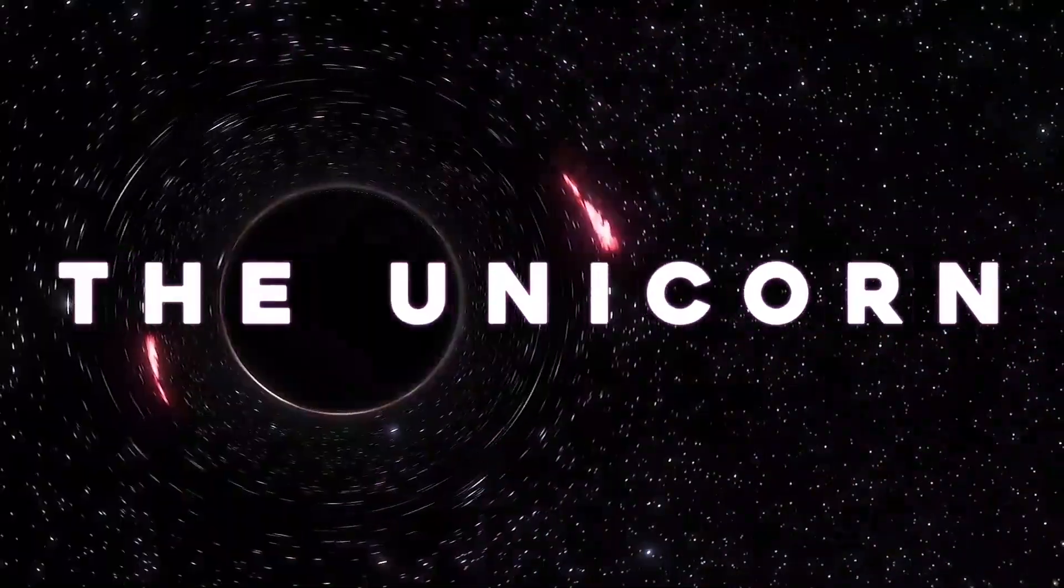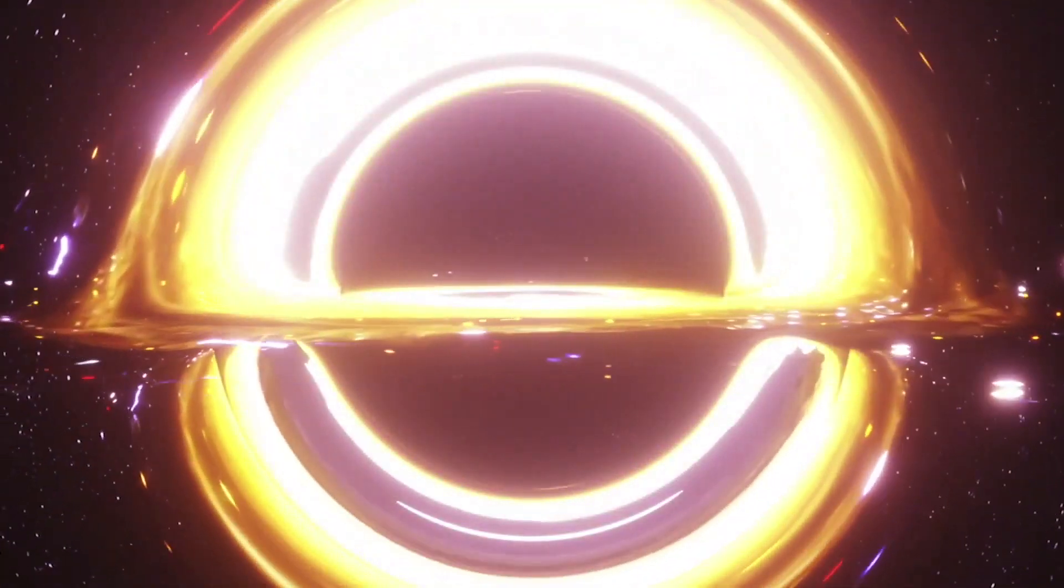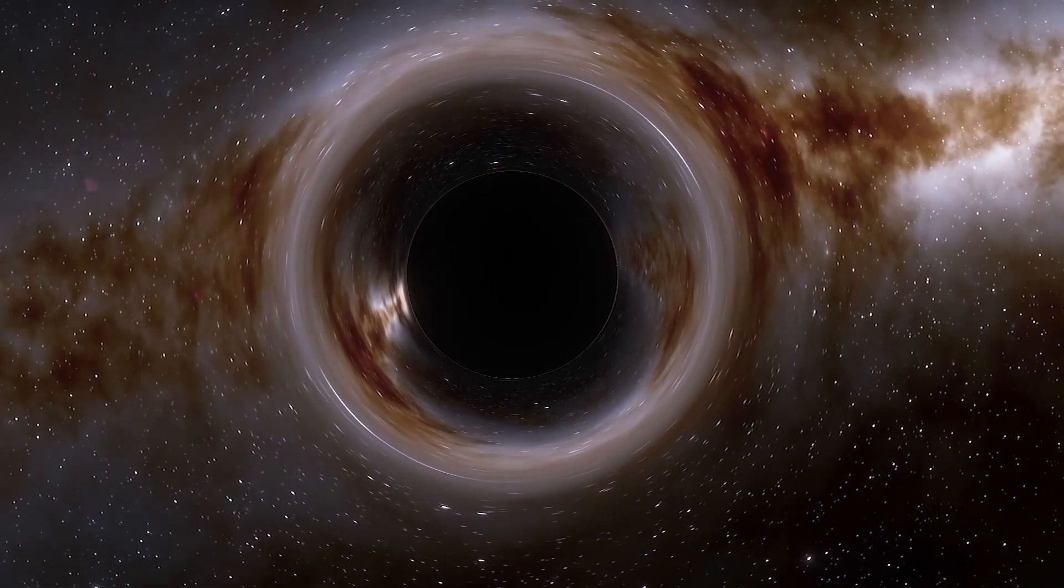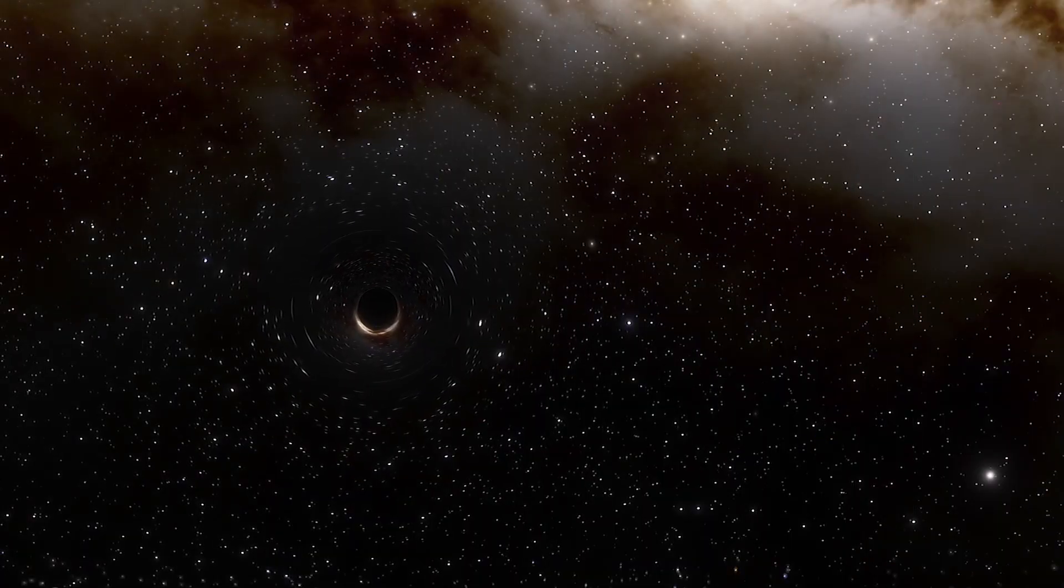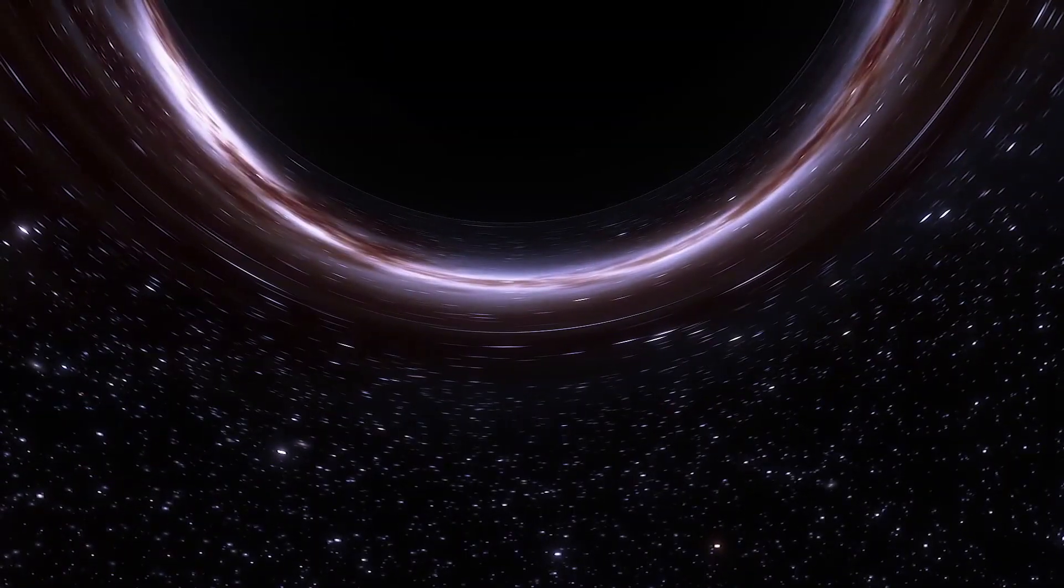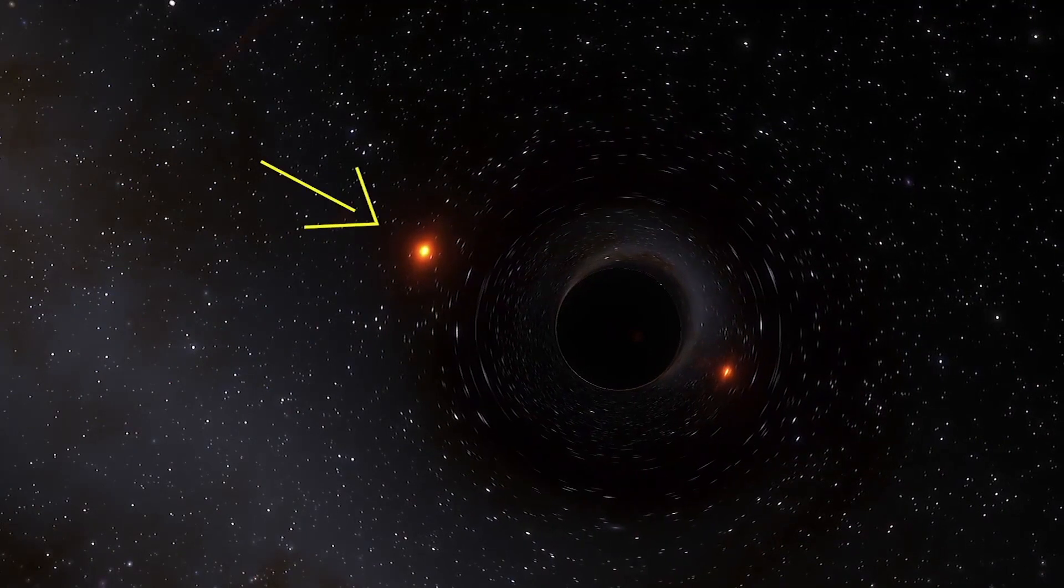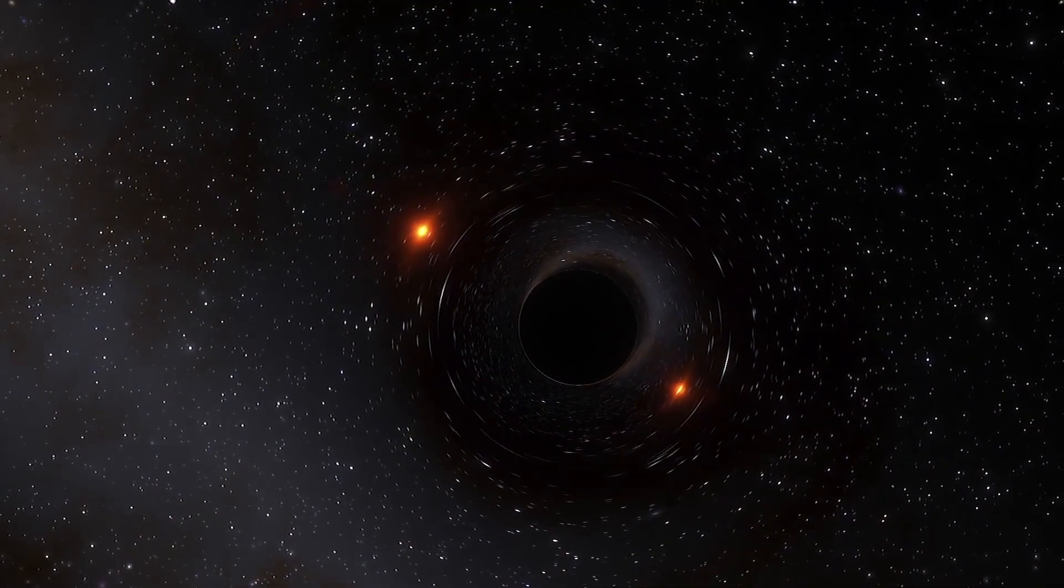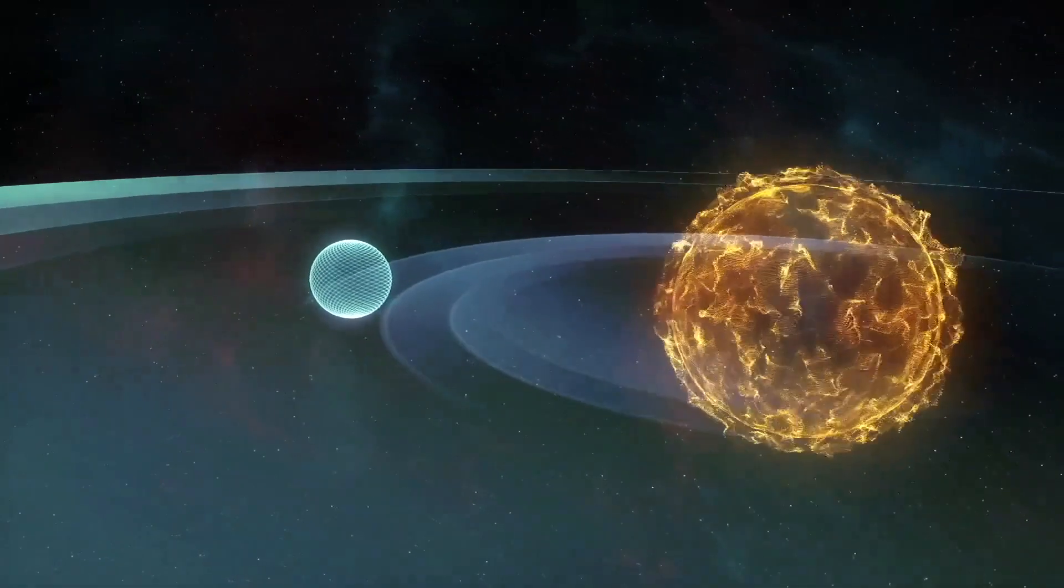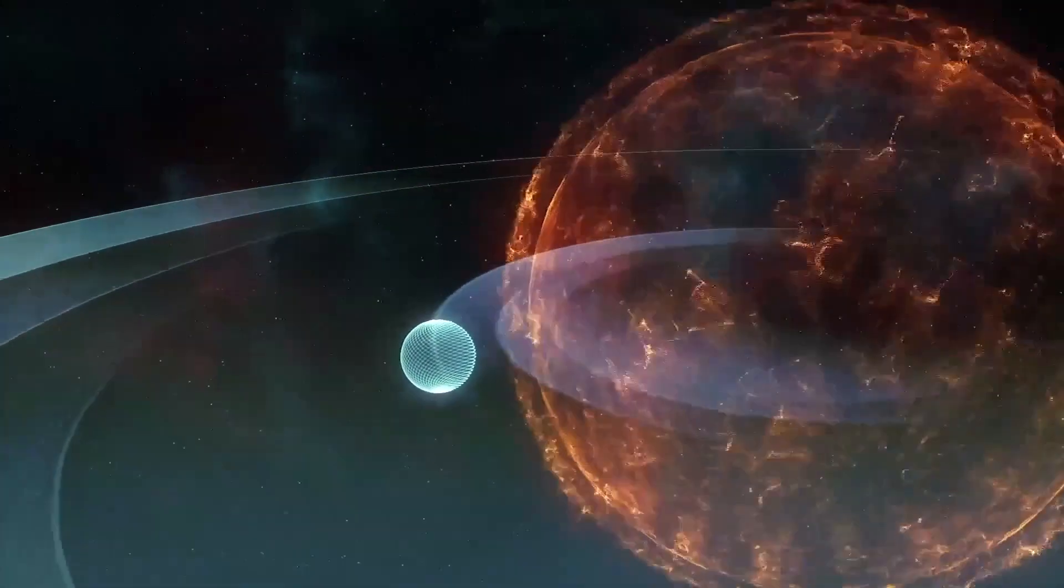The closest black hole to Earth is dubbed the Unicorn, and is situated approximately 1,500 light-years away. The nickname has a double meaning. Not only does the black hole candidate reside in the constellation Monoceros, the unicorn, but its incredibly low mass, about three times that of the Sun, makes it nearly one of a kind.